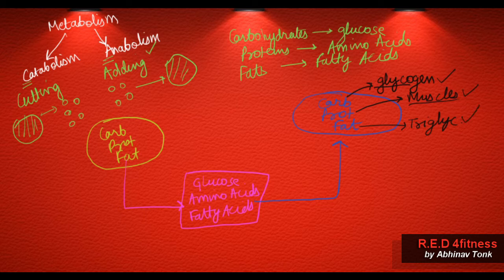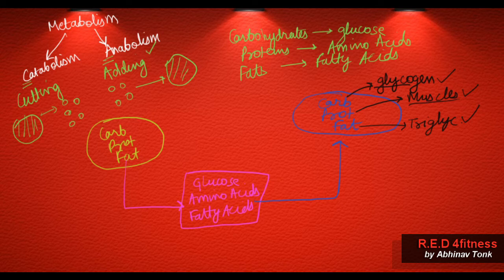Although carbs can also be converted into fat, and amino acids can also be converted into fat — I will discuss these details in upcoming videos. Just remember that the body needs macronutrients in the right configuration, and for that they need to be broken down first and then built up. Now coming back to our main topic: anabolism and catabolism.